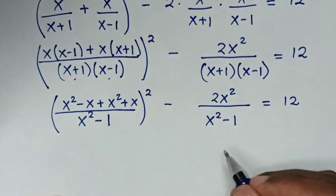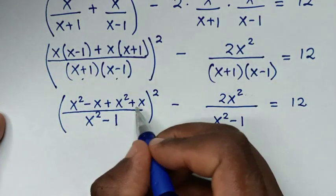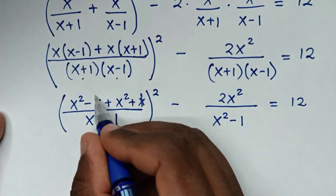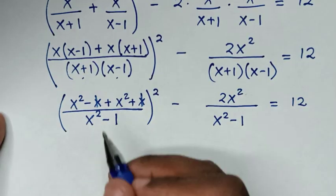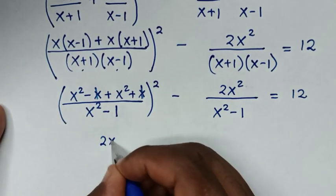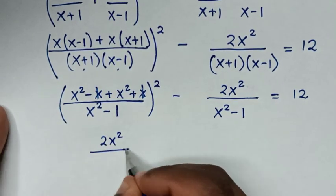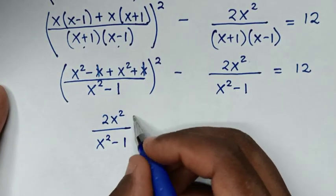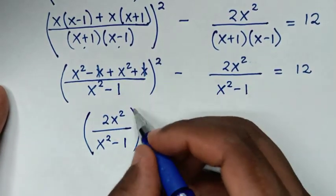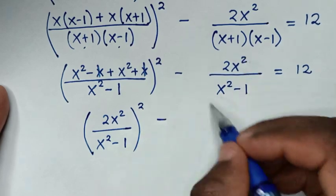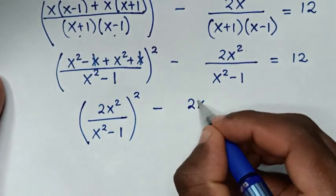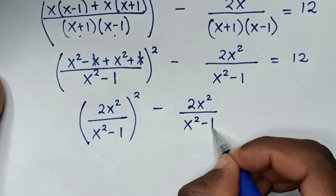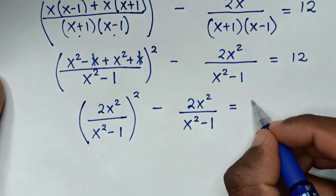Simplifying: -x + x = 0, so those cancel. We get x² + x² = 2x². The expression becomes (2x²/(x²-1))² - 2x²/(x²-1) = 12.